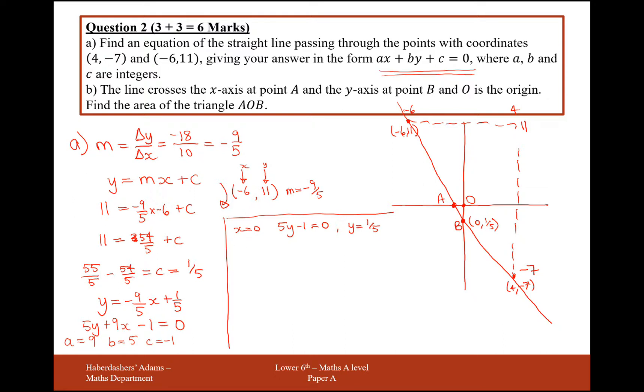For the A-coordinate, I'm just going to plug in the fact that y is equal to 0 at that point, so I'm going to get 9x - 1 = 0, so my x-coordinate is going to be 1/9. I told you this area was going to be small, this coordinate here is (1/9, 0).